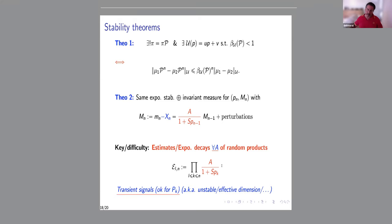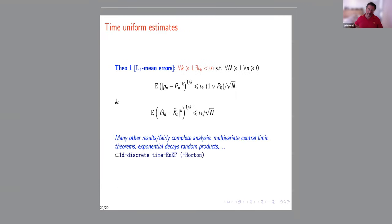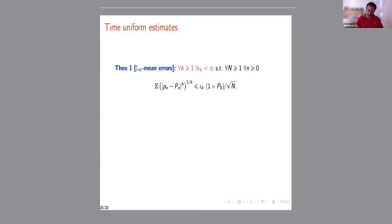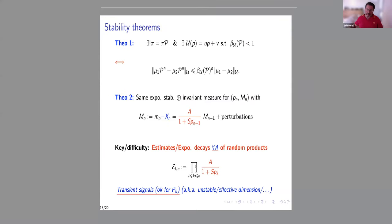Of course, extending to dimension two or three is an open question. The main difficulty will be products of random matrices instead of random numbers. In dimension one it's a product of random scalars, but in higher dimensions you have products of random matrices connected to sample covariances of interacting particle systems. Up to now, there are no tools to analyze products of dependent random matrices where the matrices are connected through such interactions.